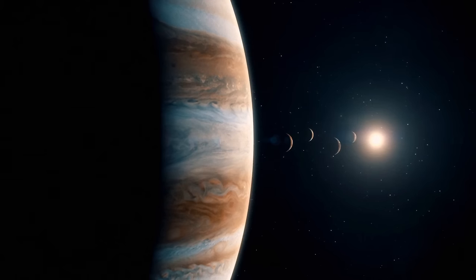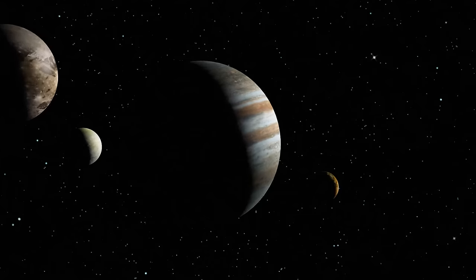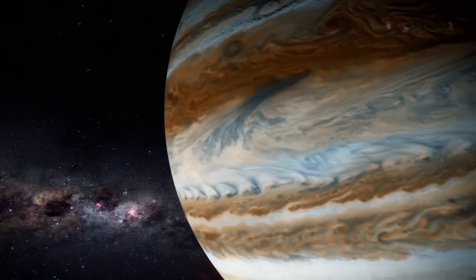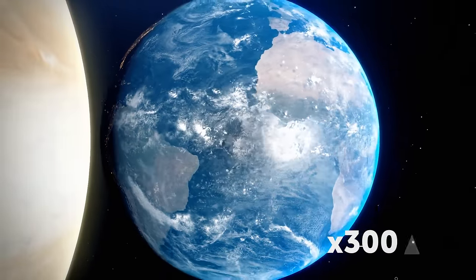Jupiter, the fastest spinning planet in our solar system, with a day lasting only 10 hours. The biggest planet in our solar system, a gas giant more than 300 times as massive as Earth.